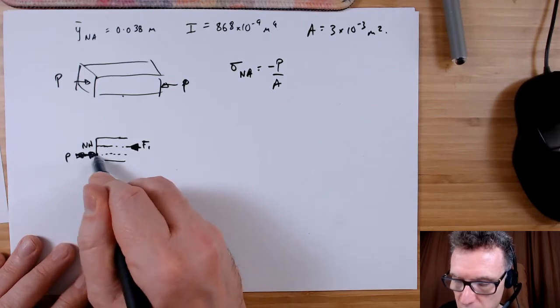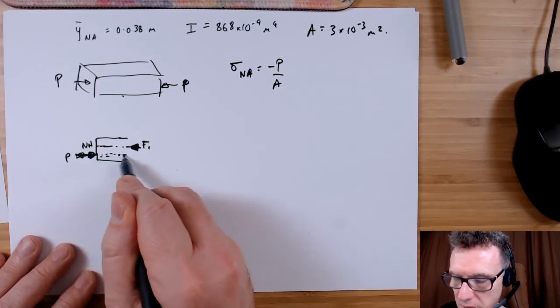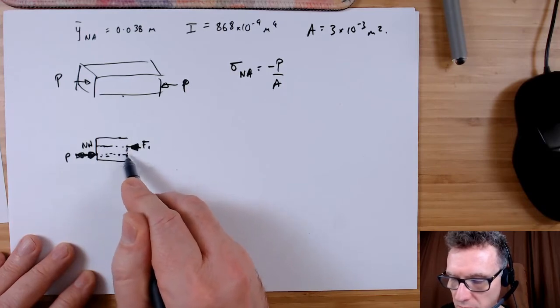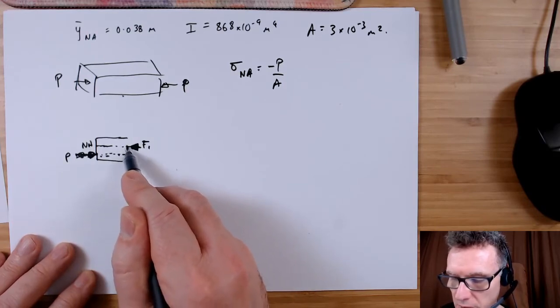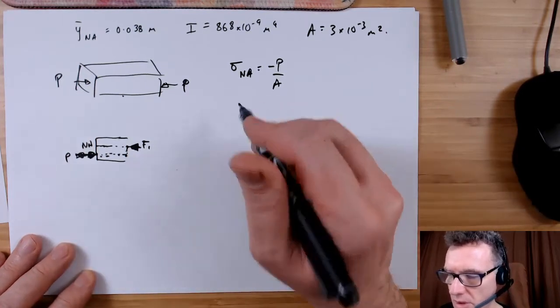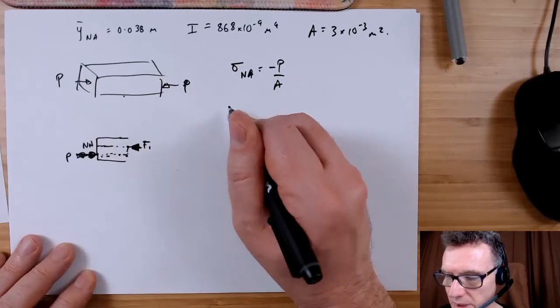So this force that I'm pushing along this line here is going to cause a turning moment based upon the distance from the neutral axis to where it's being applied. So what's that distance? Well the neutral axis is at 0.038 millimeters and this distance from here to here is 10 millimeters.